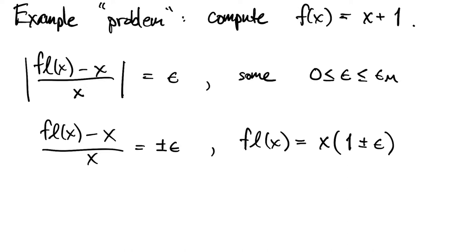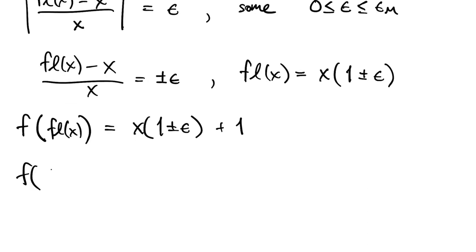Now to keep things simple, let's just suppose that the addition itself goes perfectly. So when we plug the floating-point value of x into the function, we just add 1 to it exactly. So that means the difference between our solution on the perturbed data and the solution on the original data, when you work it all out, it's just plus or minus epsilon times x itself.